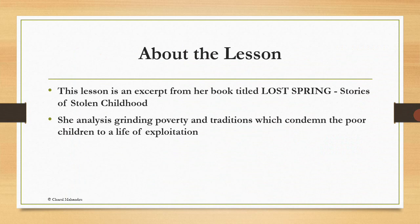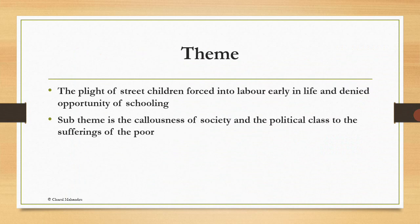This lesson is an excerpt from her book titled Lost Spring: Stories of Stolen Childhood. She analyzes grinding poverty and traditions which condemn the poor children to a life of exploitation. The theme of the story is the plight of street children forced into labor early in life and denied the opportunity of going to school. The sub-theme is the callousness of society and the political class to the sufferings of the poor.